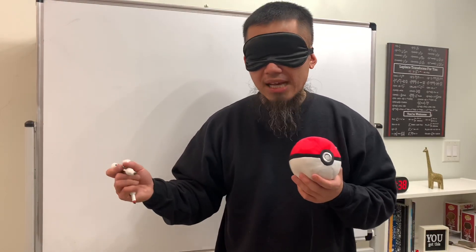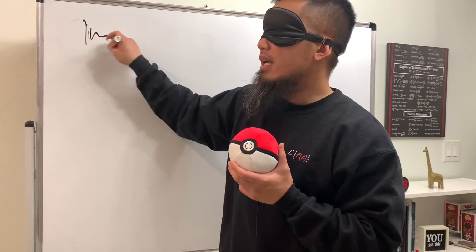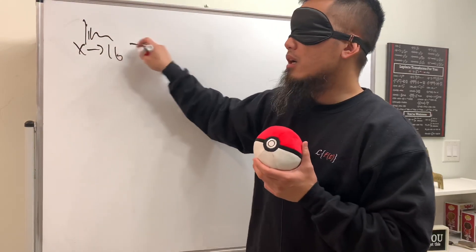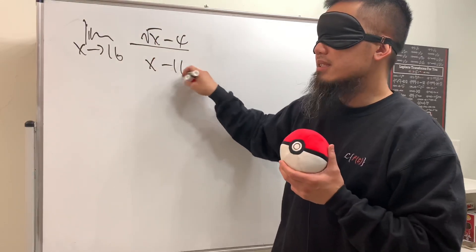So have a look right here, I will show you the limit as x approaching 16 of, here that say we have square root of x minus 4 over x minus 16.